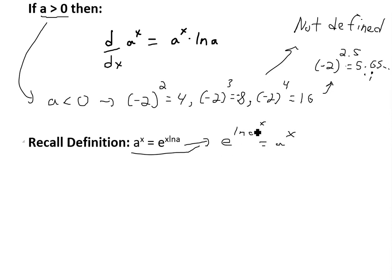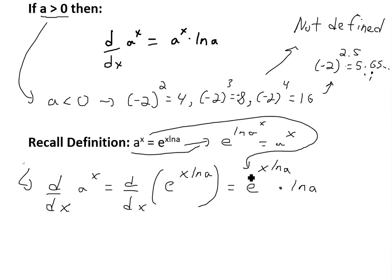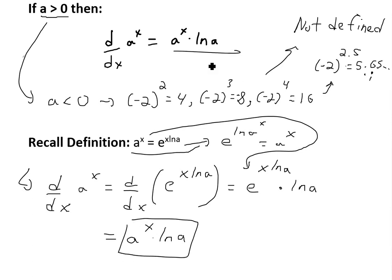We write it this way because we know how to differentiate e to the x — the derivative of e to the x is itself. So to prove this derivative, we write d/dx of a to the x, replace a to the x with its equivalent e to the x·ln(a), and take the derivative. Using the chain rule, that gives us e to the x·ln(a) times the derivative of the inside, which is ln a. We can then replace e to the x·ln(a) back with a to the x, giving a final answer of a to the x times ln a.